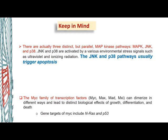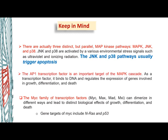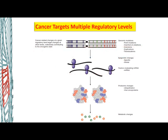In MAP kinases, there are pathways like MAP, JNK, and P38. In JNK and P38, apoptosis is triggered. AP-1 transcription factor is a very important transcription factor. When MAP kinases translocate into the nucleus, AP-1 transcription factor activates cell cycle and cyclin-dependent kinases, which activates the cell cycle. MYC is another group of transcription factors, and the gene targets include N-RAS and P53. Cancer cells use proliferative signaling at multiple levels to activate these growth factor pathways.